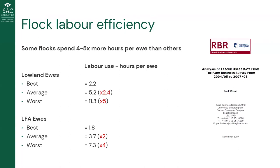Looking at labor usage from the Farm Business Survey data — four years of data by Paul Wilson — we can see that the most efficient flocks in lowland and LFA spend about two hours per ewe per annum, whilst the average sits around double that at four to five hours per ewe. The worst, most inefficient flocks spend five times more than the most efficient. If we put a wage on that — say £15–20 per hour — we're getting to some pretty big labor costs in those more inefficient flocks.